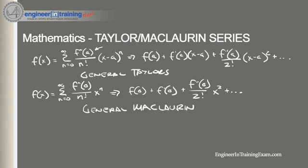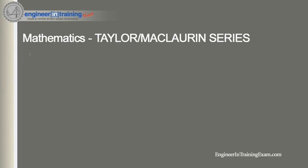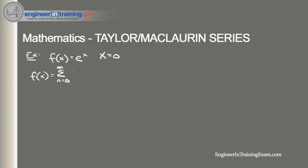Let's look at an example: if we're given a certain function on the exam and asked to convert it into its Taylor series, how would we go about doing that? Let's say we're given f(x) equals e^x and asked to find the Taylor series about x equals 0. Since this is about x equals 0, it's actually going to be a Maclaurin series. Our general formula is the sum from n equals 0 to infinity of f^(n)(0) divided by n factorial, times x raised to the n. All we need to do is define that general term for the derivatives of the function.